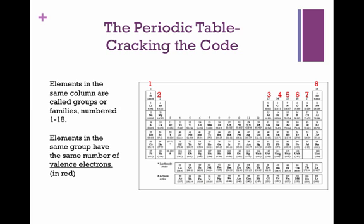Elements that are in the same column are called groups or sometimes families, and they're numbered 1 through 18. The very small numbers at the top of each column are the group numbers. Elements in the same group have the same number of valence electrons, and I put that in red at the top of the columns. In group 1, all of those elements have one valence electron. In group 2, those all have two.